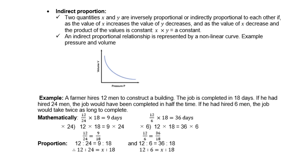Let's look now at indirect proportion. Two quantities, X and Y, are inversely or indirectly proportional to each other if the value of X increases and the value of Y decreases. And as the value of X decreases, the product of the values is constant. So therefore, X times Y is a constant. So the product.